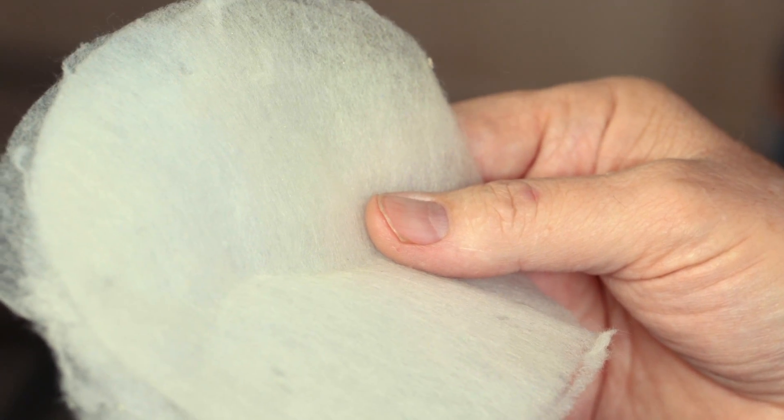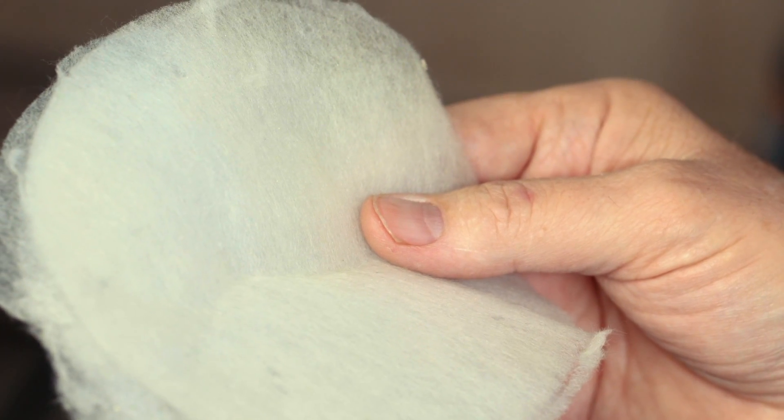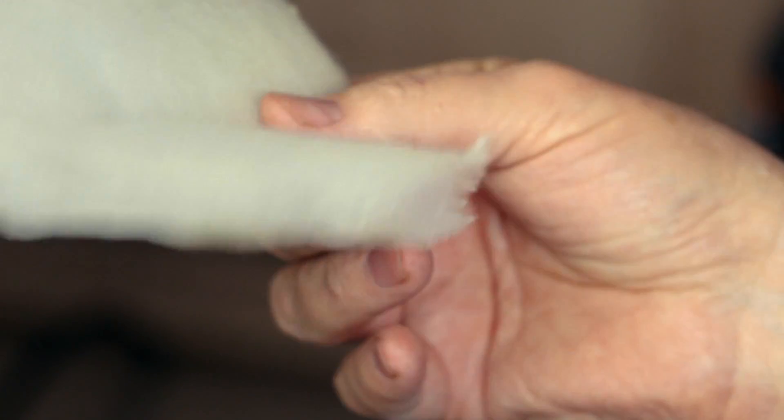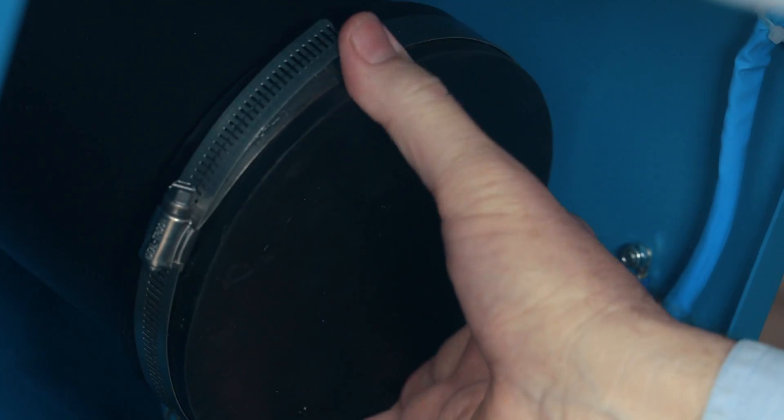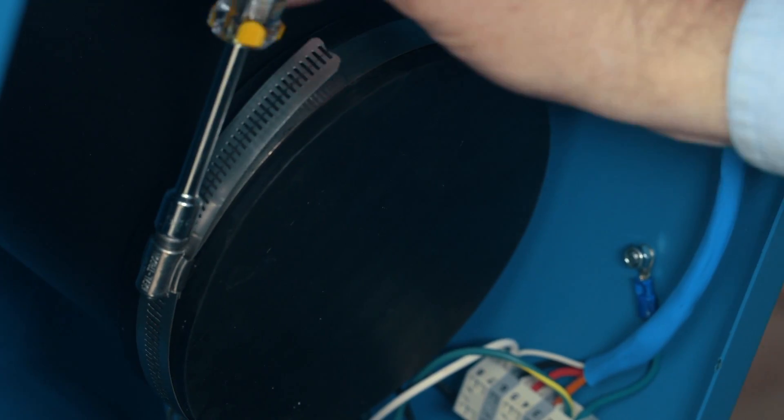If the pad is damaged or has holes, replace it with a new pad. If it is not damaged, simply clean away the debris caught in the fibers and reinstall the pad in the cap. Replace the cap on the bottom of the casting chamber and secure it in place with a hose clamp.